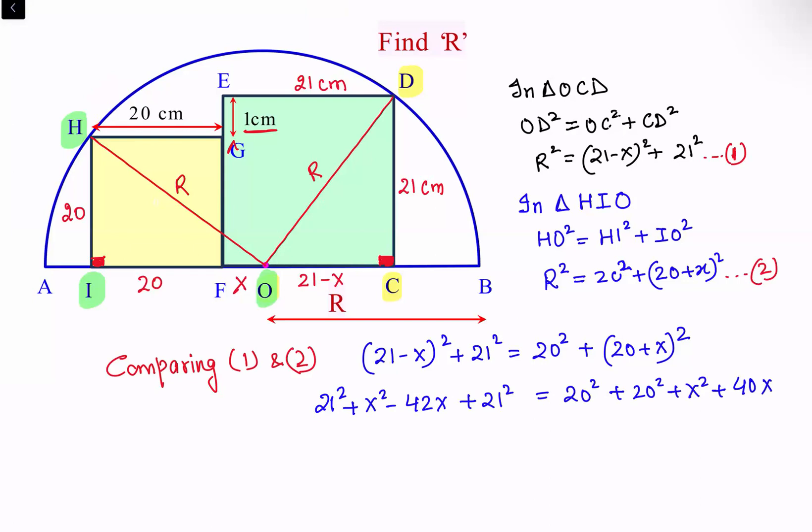So both sides X square is there. So X square term will get cancelled out. So let's take X terms on one side and without X terms on the other side. So this term I'll take on the other side. So we are getting 2 times of 21 square minus 2 times of 20 square. This is 40 X plus 42 X.